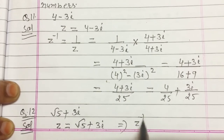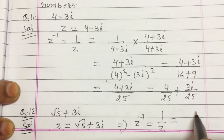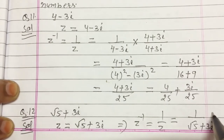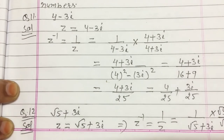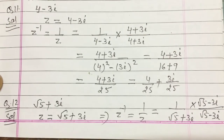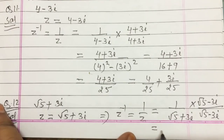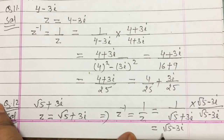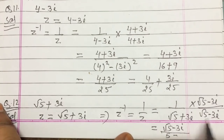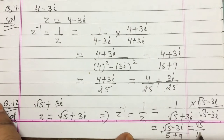Same as before, we have to find z inverse = 1/z = 1/(√5 + 3i). Multiply and divide by the conjugate (√5 − 3i) and simplify. The denominator becomes (√5)² + 3² = 5 + 9 = 14, since i² = −1 makes the minus sign a plus. So the answer is √5/14 − 3/14 i.